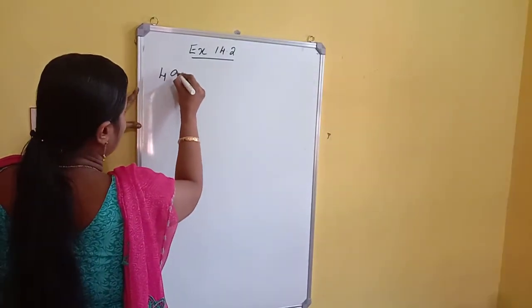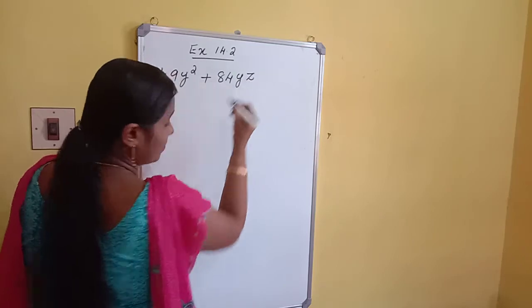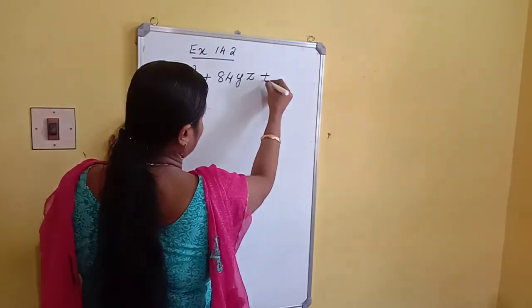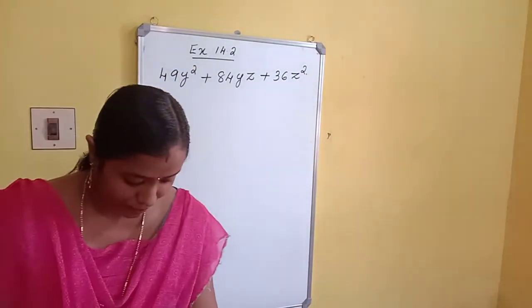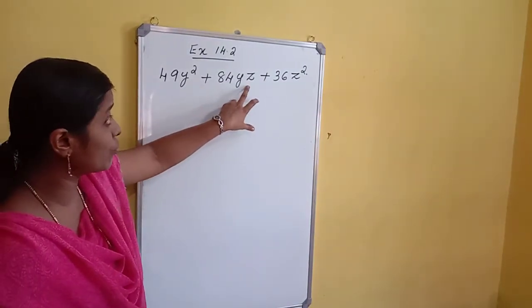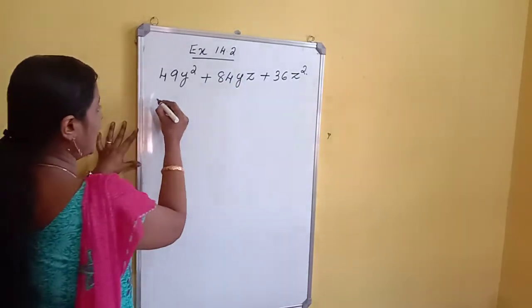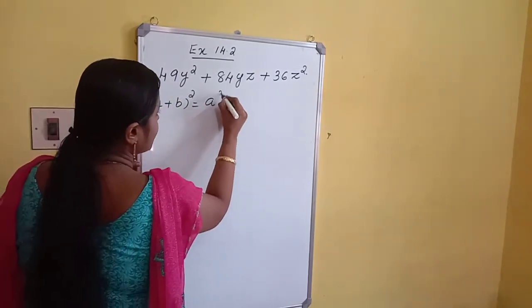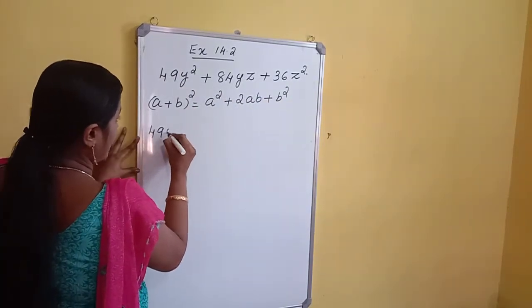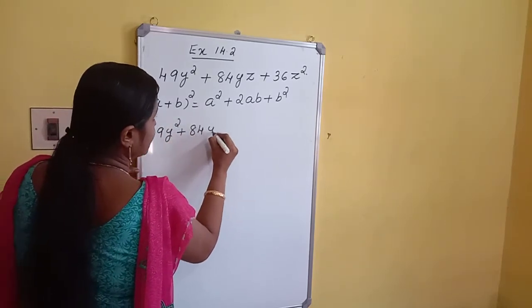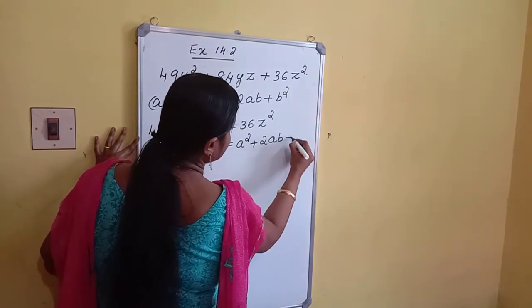Next problem: 49Y squared plus 84YZ plus 36Z squared. All three terms are positive, so we use the identity A plus B whole square equals A squared plus 2AB plus B squared. Comparing: 49Y squared plus 84YZ plus 36Z squared equals A squared plus 2AB plus B squared.